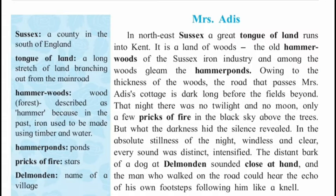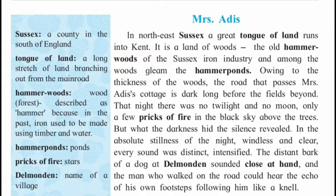But where the darkness hid, the silence revealed. In the absolute stillness of the night, windless and clear, every sound was distinct, intensified. The distant bark of a dog at Delmonden sounded close at hand. And the man who walked on the road could hear the echo of his own footsteps following him like a knell. It was a very calm and quiet night with no wind, and every sound was distinct. There were dogs barking at a nearby village, and that sound seemed close at hand. A man was walking on the road and could hear the echo of his own footsteps.